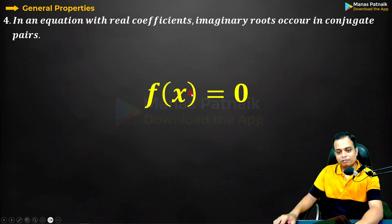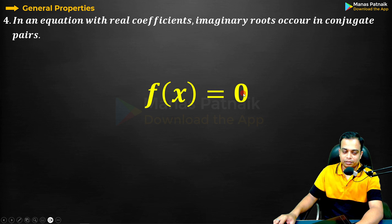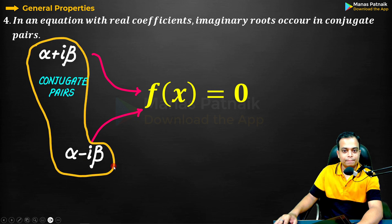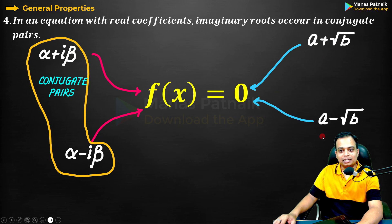If you recall properly, this is something that we discussed in detail. Let's say f of x equals 0 is your algebraic equation whose one root is imaginary, so the other root will also be imaginary. The only difference is here it is alpha plus i beta, this is alpha minus i beta, and this is what you call a conjugate pair. In the same fashion, if you've got an irrational root, if it is a plus root b, the other irrational root has to be a minus root b.